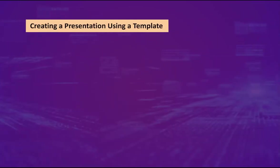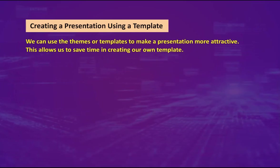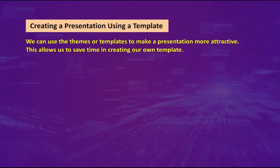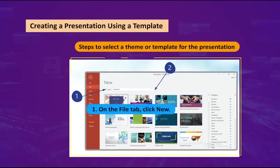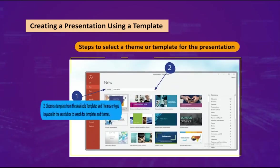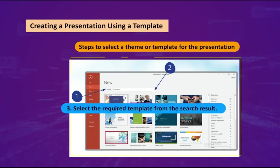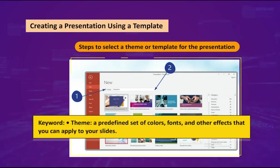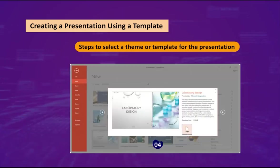Creating a presentation using a template: We can use themes or templates to make a presentation more attractive, saving time in creating our own template. Steps to select a theme or template: one, on the File tab, click New; two, choose a template from the available templates and themes, or type a keyword in the search box; three, select the required template from the search results. A theme is a predefined set of colors, fonts, and other effects that you can apply to your slides. Four, click the Create option — a new presentation is created based on the selected template.